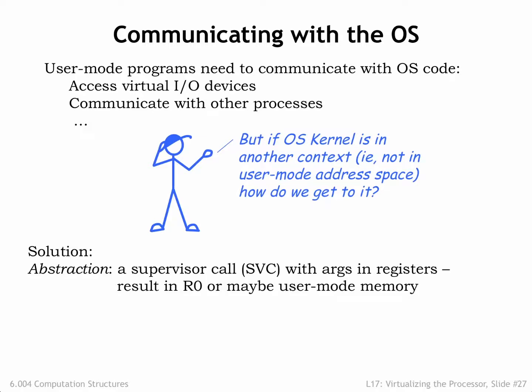What's needed is the ability for user mode programs to call OS code at specific entry points, using registers or the user mode virtual memory to send or receive information. We'd use these supervisor calls to access a well-documented and secure OS application programming interface. An example of such an interface is POSIX, a standard interface implemented by many UNIX-like operating systems.